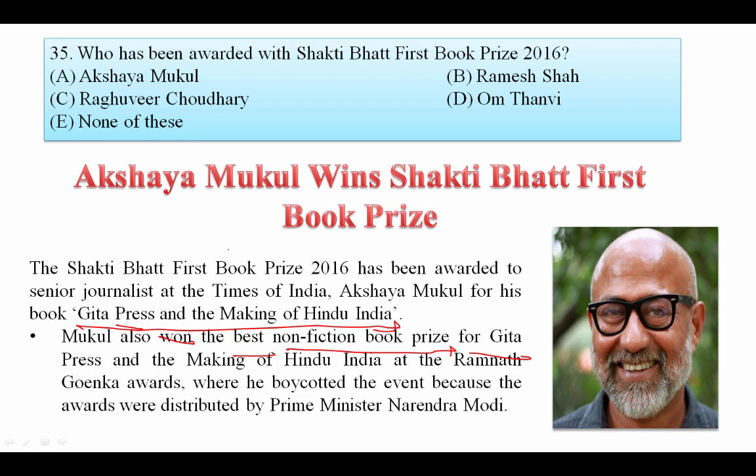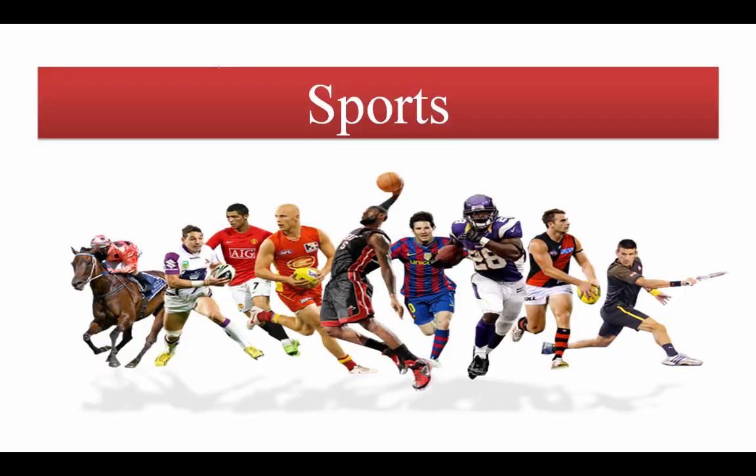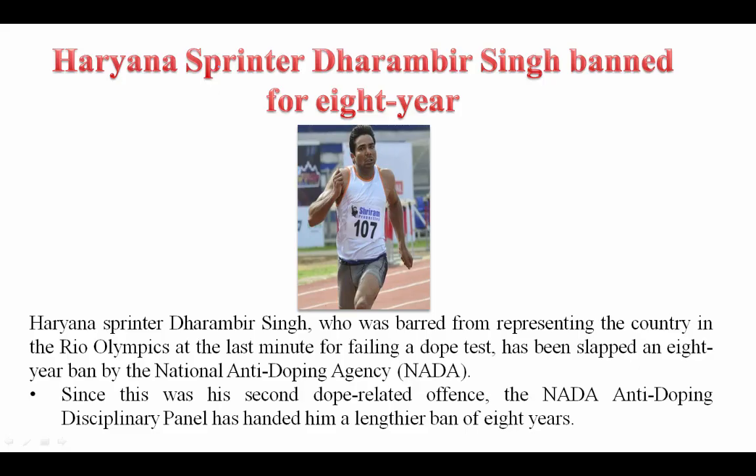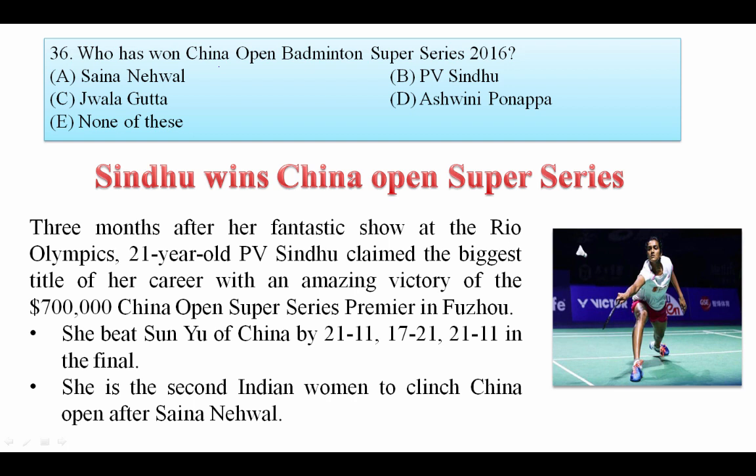Indian sprinter Dharamveer Singh was banned for eight years by the National Anti-Doping Agency (NADA) after he failed a dope test and missed the Rio Olympics at the last minute. Now let's see sports questions.